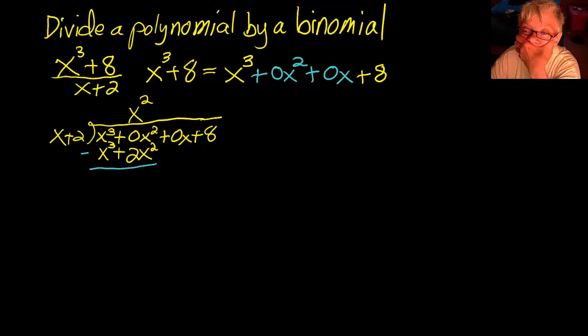Draw the line. Change the signs. 0x squared minus 2x squared equals negative 2x squared. Bring down 0x.